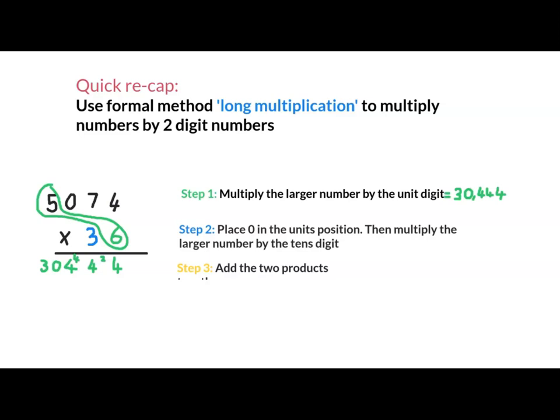Moving on to step 2. 5,074 multiplied by 30. Place my 0 in the unit position. That is so important. Now, 3 times 4, 12. 7 times 3, 21. Add 1, 22.